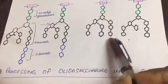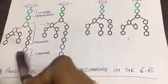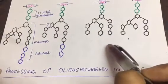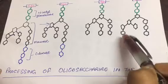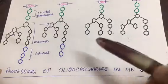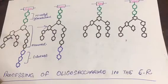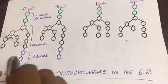So endoplasmic reticulum processing ends here. Further modifications are in Golgi apparatus.